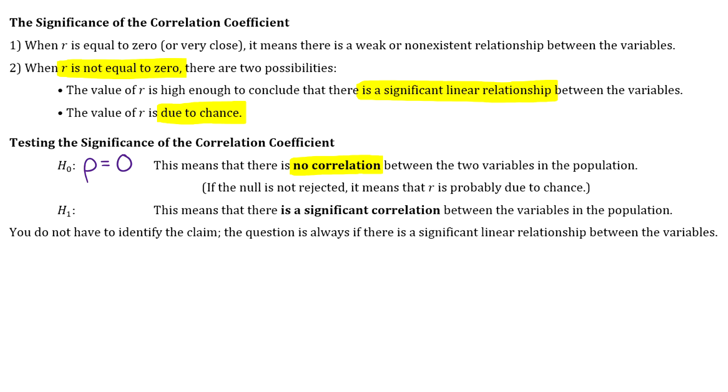And then the alternative is always going to be that rho is not equal to 0. So that statement is saying that there is a significant correlation between the two variables.